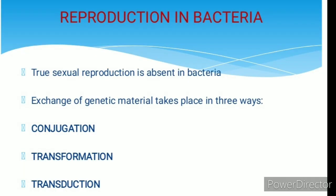Reproduction in bacteria: true sexual reproduction is absent in bacteria, but the exchange of genetic material takes place in three ways: one, conjugation; two, transformation; three, transduction.